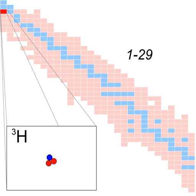Tritium, symbol T or 3H, also known as hydrogen-3, is a radioactive isotope of hydrogen.